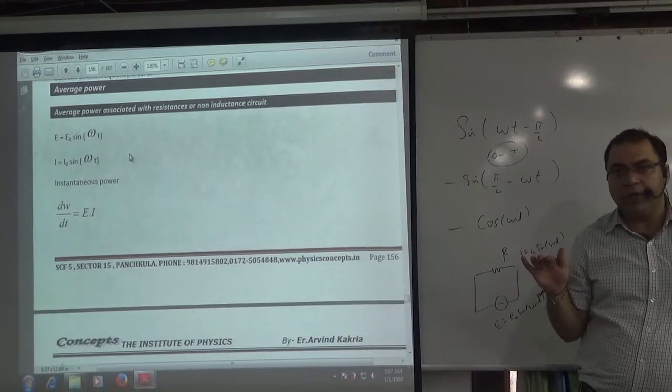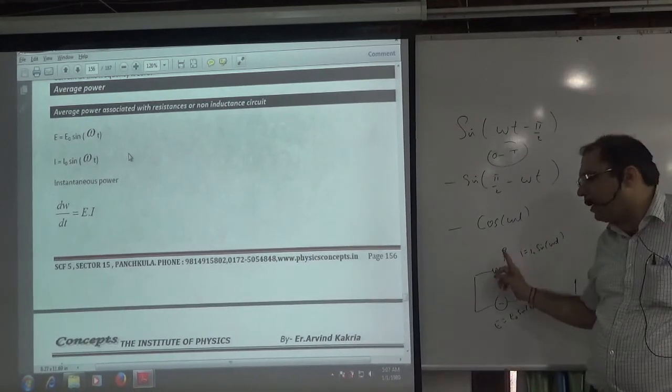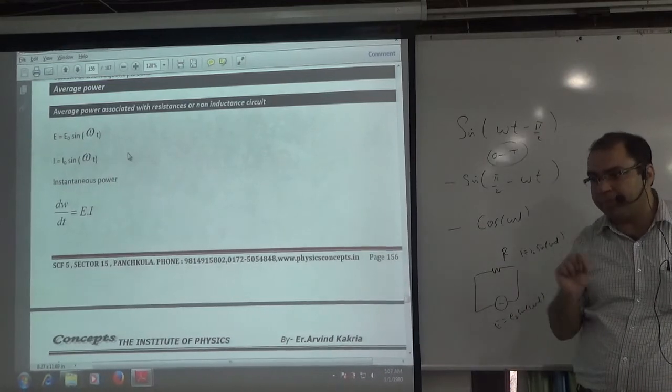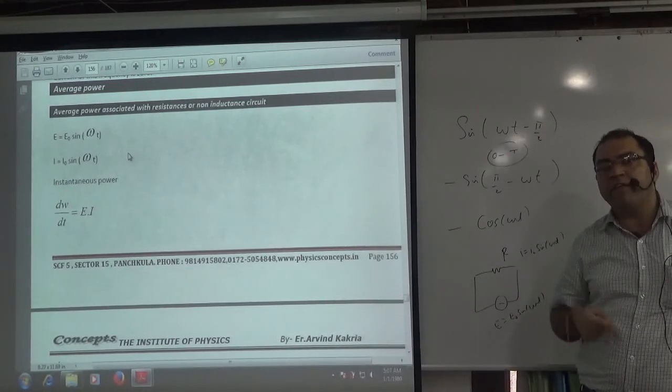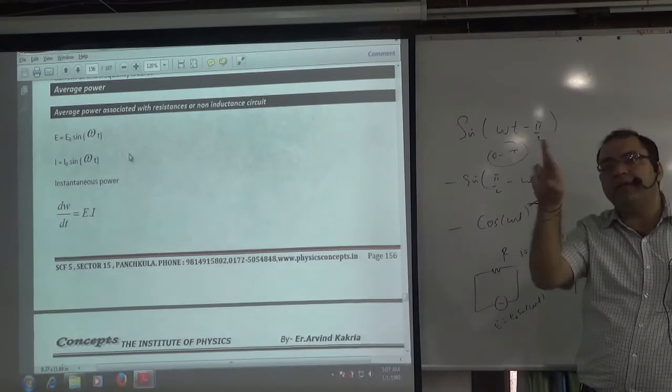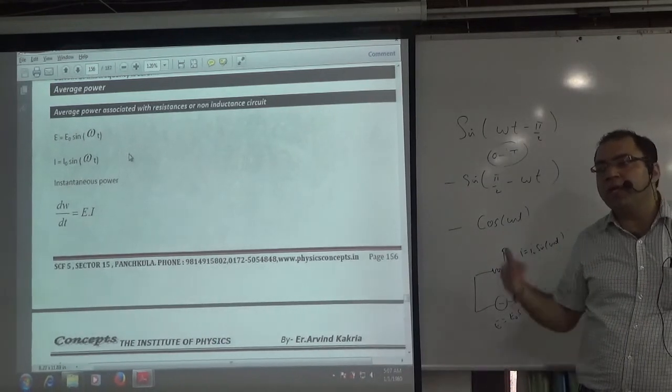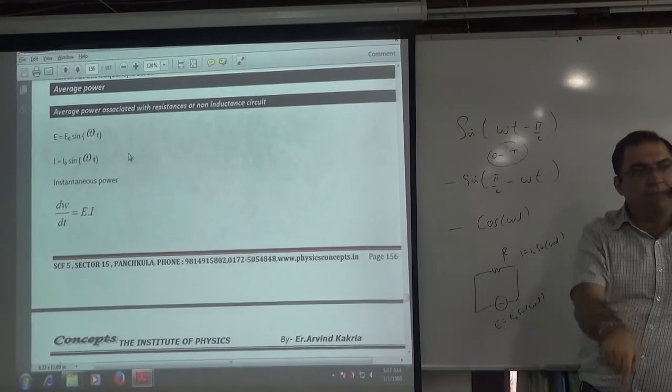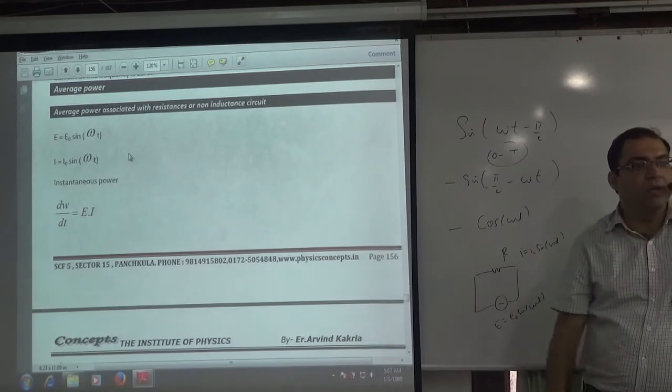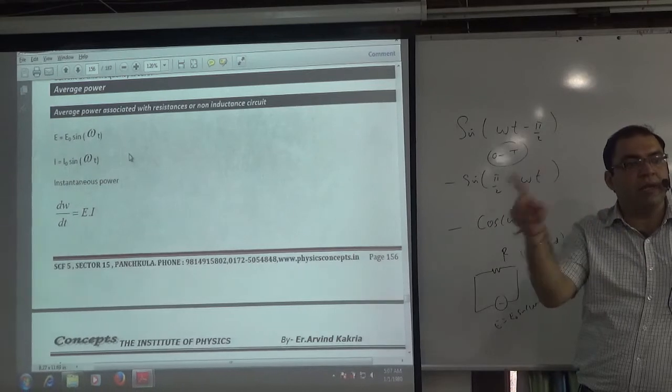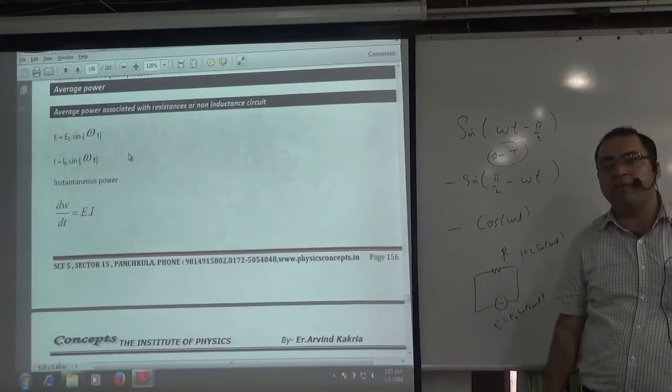I will remove R in the next topic. I will remove R, I will place L here, only inductor. Then I will ask the same thing, what will be the value of average power during a complete cycle? What will be the inductor in the inductor? Then I will place only capacitor. Then I will ask the same thing, what will be the value of average power? Then I will place L, C, R in series. Then I will ask the same thing, what will be the value of average power?